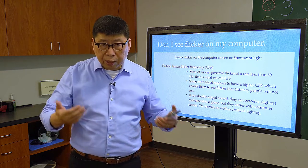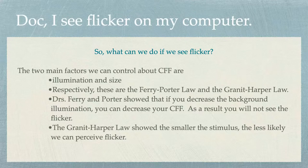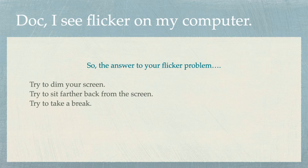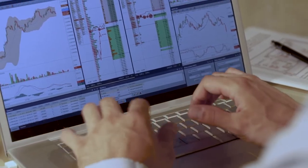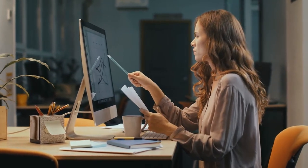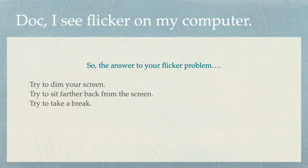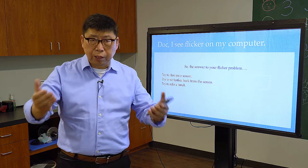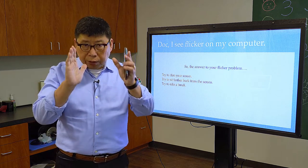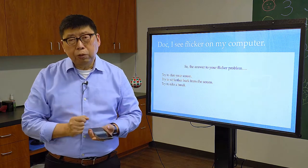For those people dealing with this, what can be done? There are some theories — one is called the Ferry-Porter law, and the other is called the Greenlight Harper law. They address this population with a higher CFF. Number one, you can dim your screen, because dimming suppresses your rod receptors, so you don't see periphery or movement as much. Number two, you can sit further back — size makes a difference. The larger the image size, the easier it is to see flicker. By looking at the image with central vision instead of peripheral vision, you'll see less flicker.